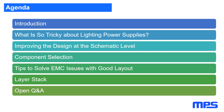First of all we are going to do a brief introduction on automotive lighting, then we will answer what is so tricky about lighting power supplies. After that we will give some comments on how to improve the design at schematics level, before going into layout and testing, and then we will talk about component selection. Then my colleague Ralph will take over and give you some tips to solve EMC issues with PCB layout and discuss a correct layer stack. At the end there will be an open Q&A, so feel free to save your questions for then and we will answer.